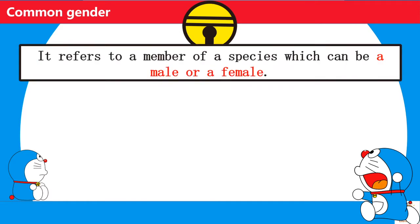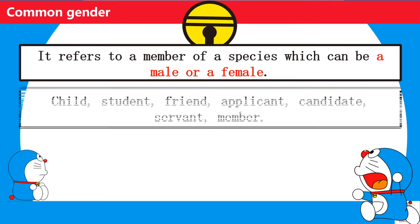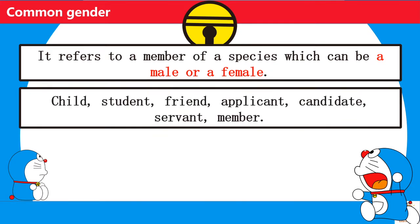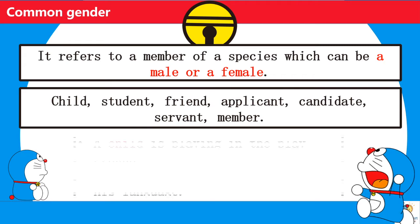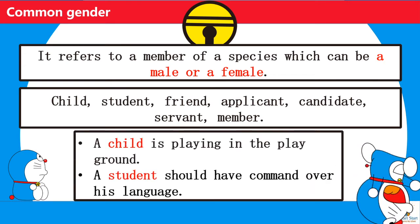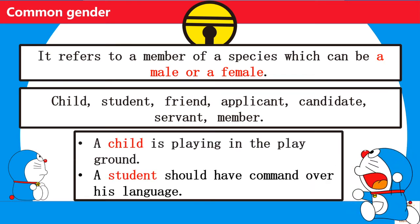Common gender refers to the member of a species which can be male or female. Child, student, friend, applicant, candidate, servant, and member are examples of common gender. A child is playing in a playground — here, child is common gender.